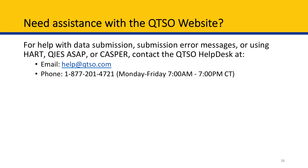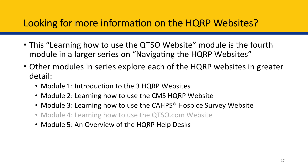If you have additional questions about the QTSO website or need further assistance with HEART, KEYS ASAP, or CASPER, you can contact the QTSO Help Desk at the email address or phone number provided. This concludes the module on learning how to use the QTSO website. After reviewing this module, you should understand which systems and tools QTSO provides support for, as well as areas of the website relevant to hospice providers. This is the fourth of five modules in the Navigating the HQRP Websites series, and we encourage you to view the other modules for additional information. The information presented was correct as of the date it was recorded and is not a legal document; official Medicare program legal guidance is contained in the relevant statutes, regulations, and rulings.